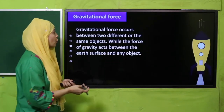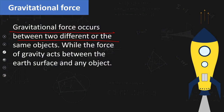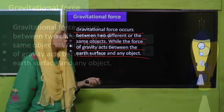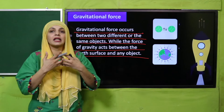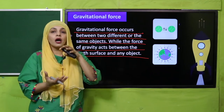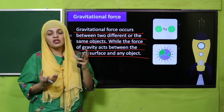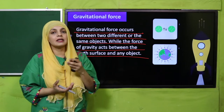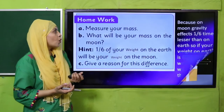Gravitational force occurs between two different or the same objects, while the force of gravity acts between the earth's surface and any object. Doh cheezon ke darmiyan jo attraction hoti hai — that is gravitational force. Aur earth aur kisi bhi cheez ke darmiyan jo force act kerti hai — that is force of gravity.